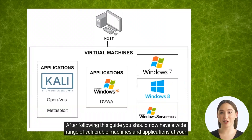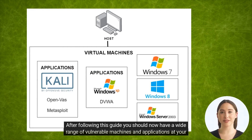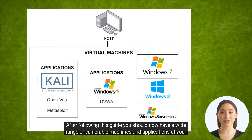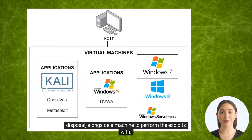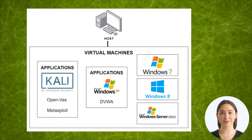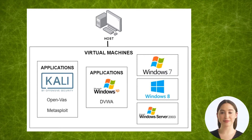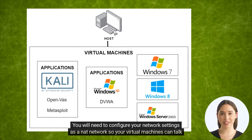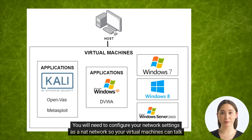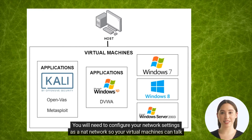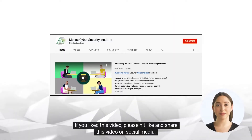After following this guide, you should now have a wide range of vulnerable machines and applications at your disposal, alongside a machine to perform the exploits with. Your lab topology should look similar to this. You'll need to configure your network settings as a NAT network so your virtual machines can talk to each other.